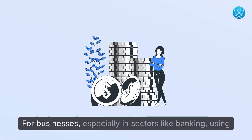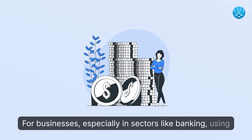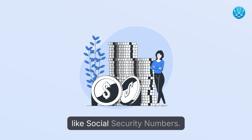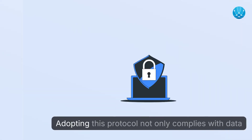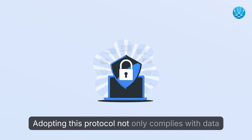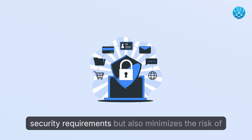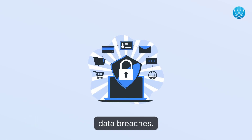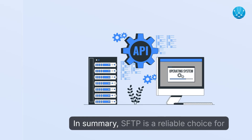For businesses, especially in sectors like banking, using SFTP helps protect sensitive data, including confidential information like social security numbers. Adopting this protocol not only complies with data security requirements, but also minimizes the risk of data breaches.